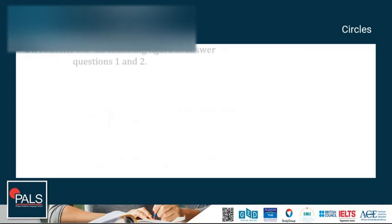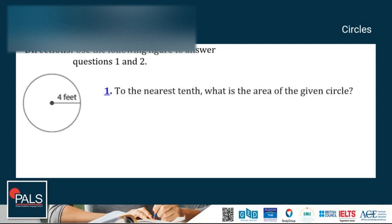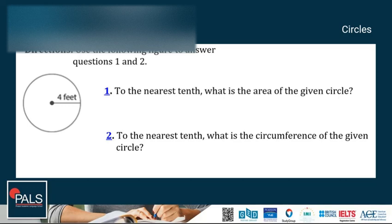Let's have more examples on circles. Use the following figure to answer questions 1 and 2. The first question is, what is the area of the given circle? So using the area formula, we have πr². So we've got 3.14 for pi, then 4² for the radius. And the final answer is 50.2 feet squared.